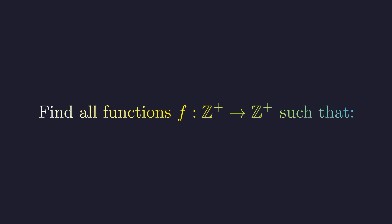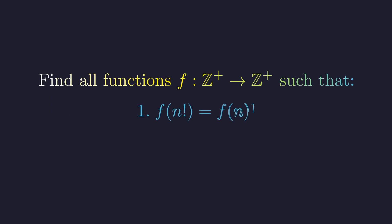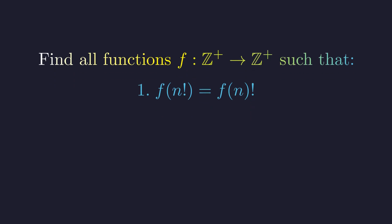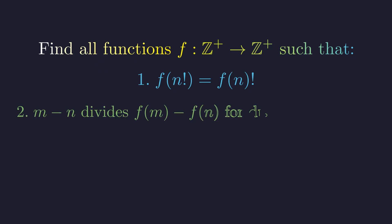We're on the hunt for all functions from the positive integers to the positive integers that satisfy two very specific and unusual conditions. First, the function of a factorial must equal the factorial of the function's value. Second, the difference between any two inputs m and n must divide the difference of their outputs. This condition is a powerful constraint on the function's growth.